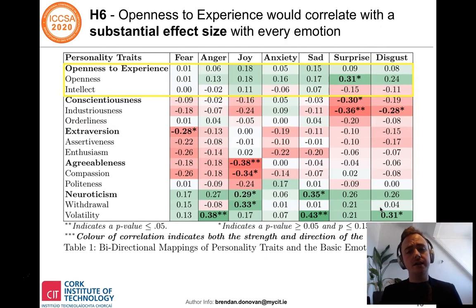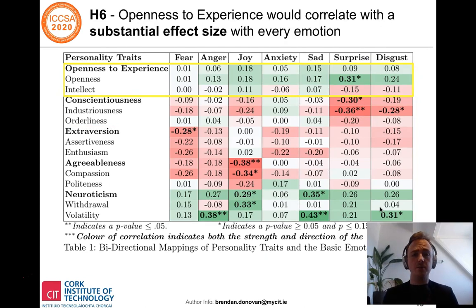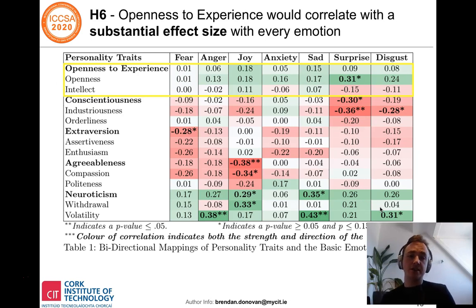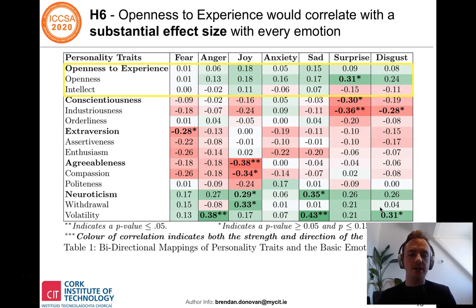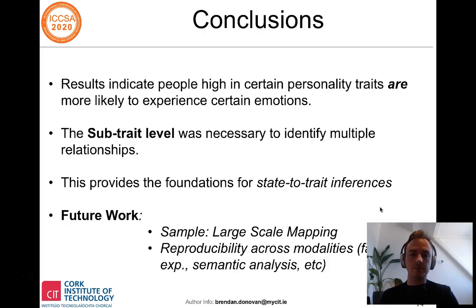Openness to experience had substantial effect size correlations — greater than 0.10 or less than minus 0.10 — with six of the seven basic emotions. The one exception was fear. Neuroticism similarly correlated significantly with six of the seven emotions included. However, it is hard to draw a firm conclusion as other personality traits showed similar broad patterns of relationship.